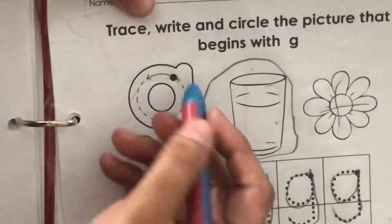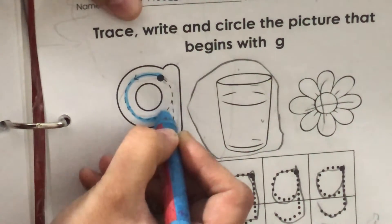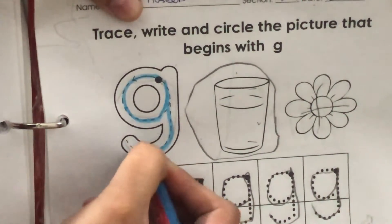Let's start tracing. Start from the dot, make a ka, go up, come down straight, make a monkey tail.